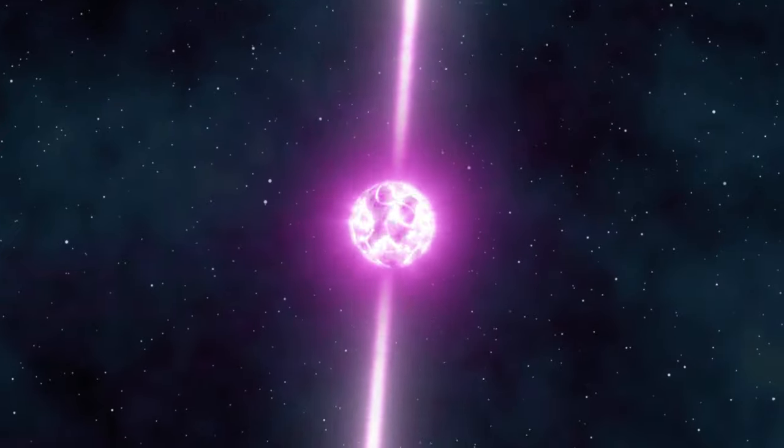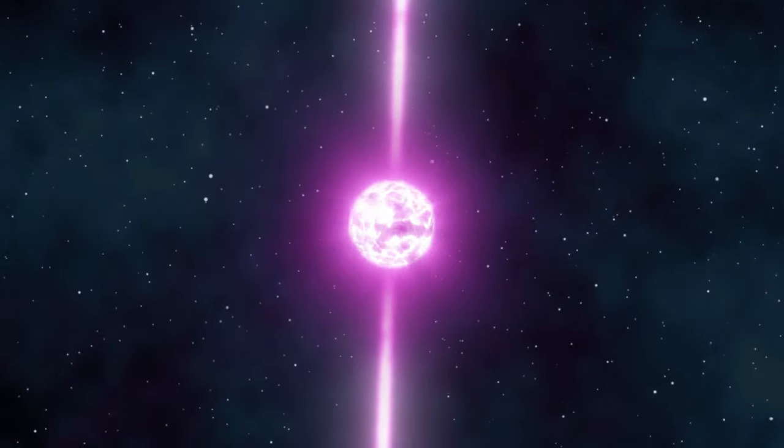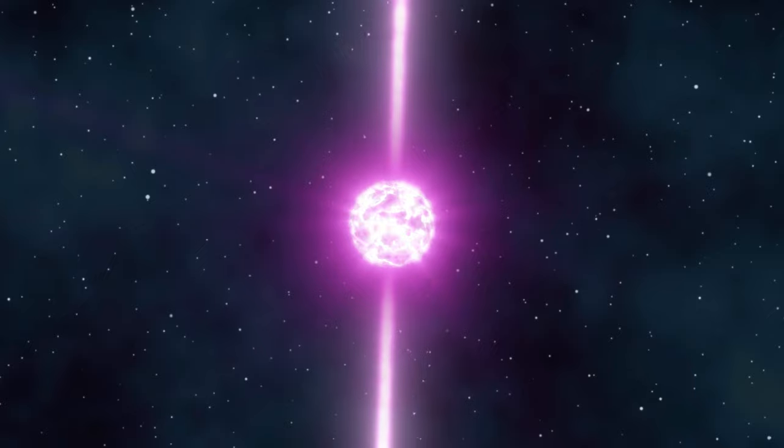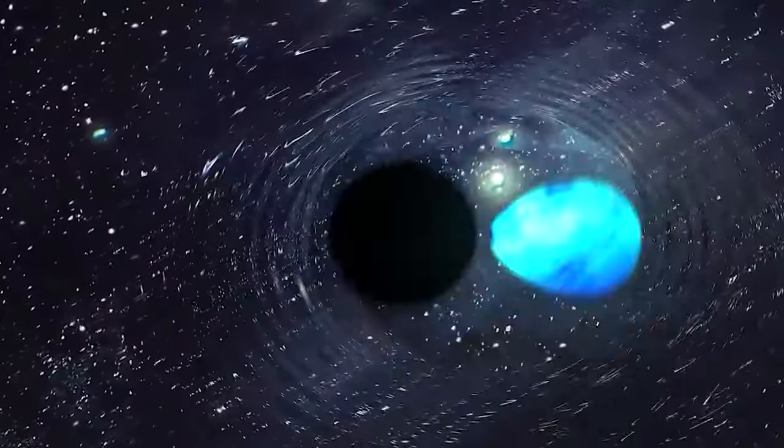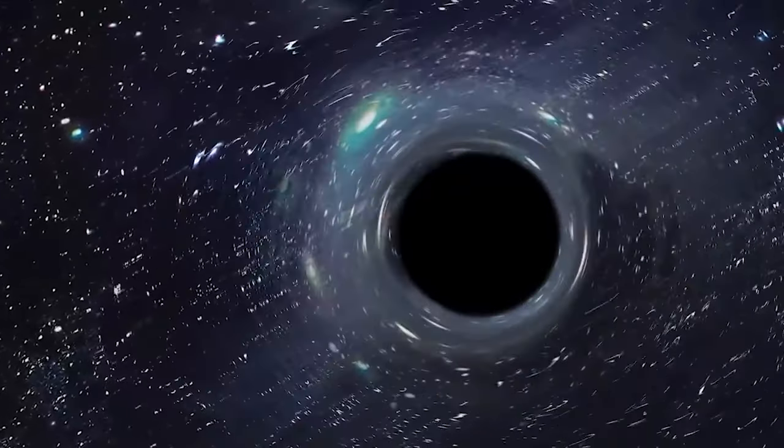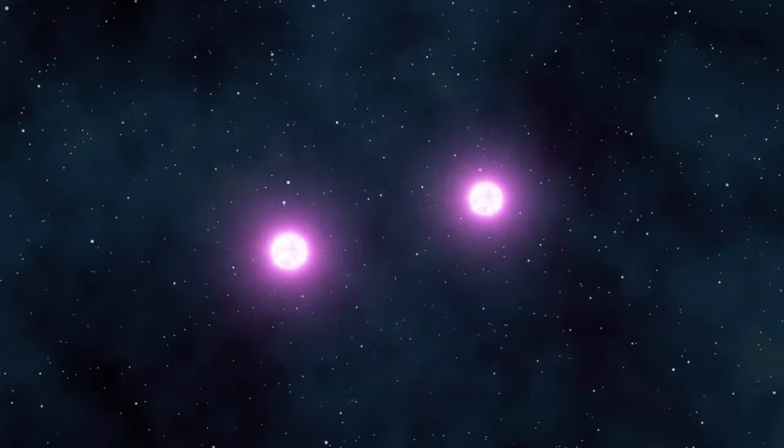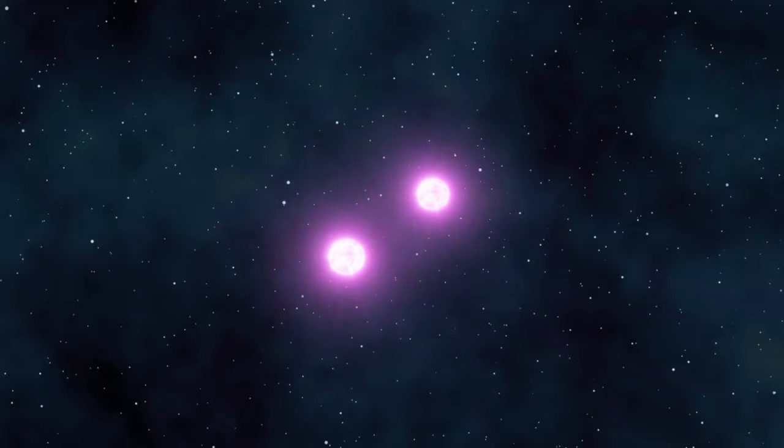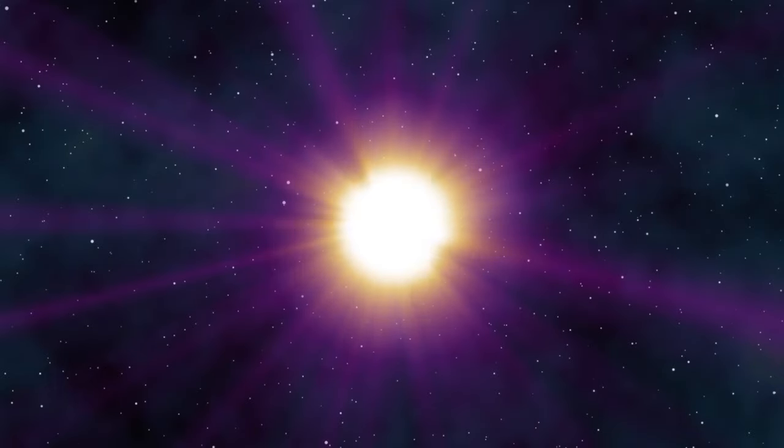Neutron stars represent the culmination of massive star evolution. But how does their own evolution conclude? Currently, several potential scenarios for neutron star demise are known, and in all cases, the end result is the same, transformation into a black hole. Firstly, a neutron star could be entirely consumed by a black hole if it ventures too close. Additionally, two neutron stars could collide. Since the combined mass of the initial objects always exceeds 1.4 solar masses, the product of their collision will inevitably be greater than 2.2 solar masses, surpassing the Oppenheimer-Volkoff limit. Consequently, the outcome will always be a black hole.